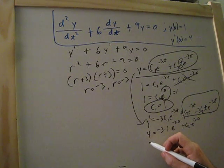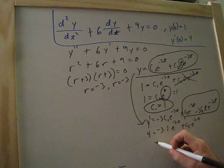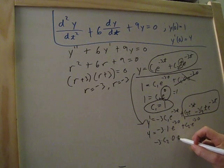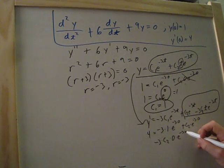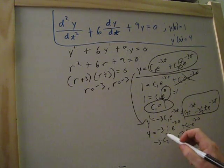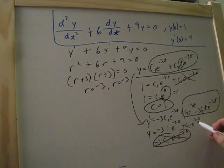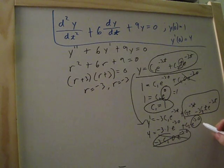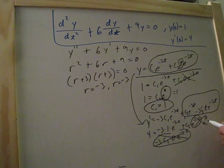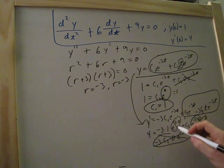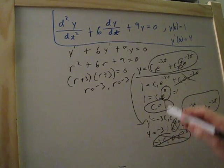plus c2 times e to the negative 3 times 0. And then we'll bring this down a little bit. So minus 3 times c2 times 0 times e to the negative 3 times 0. So all this is times 0, so this all goes away. This right here is e to the 0. So that goes away because that's a times 1. And then that's also equal to 1. And so let me simplify this.